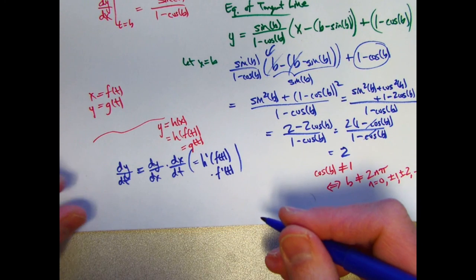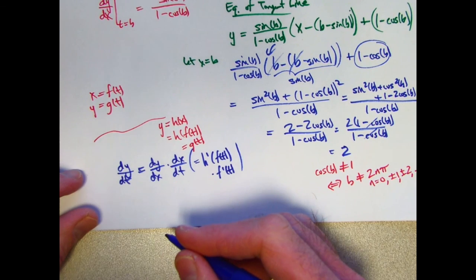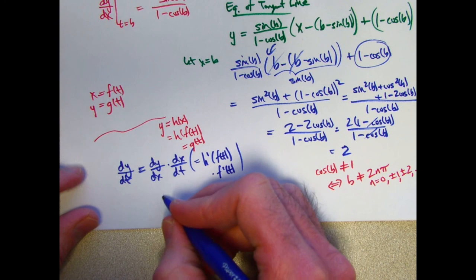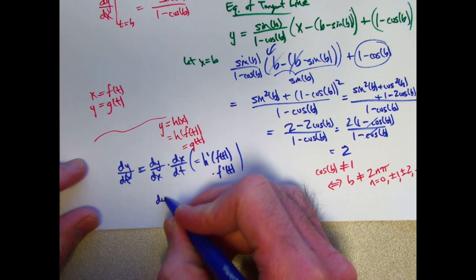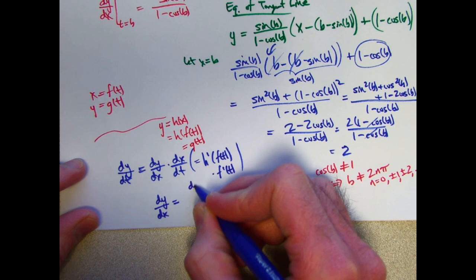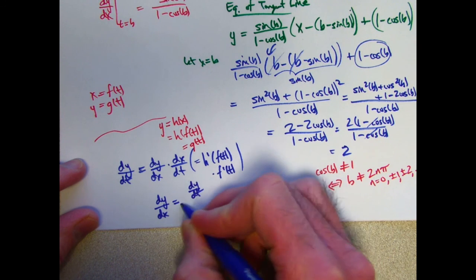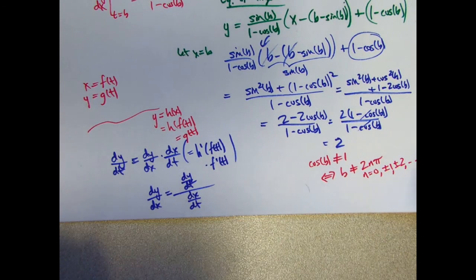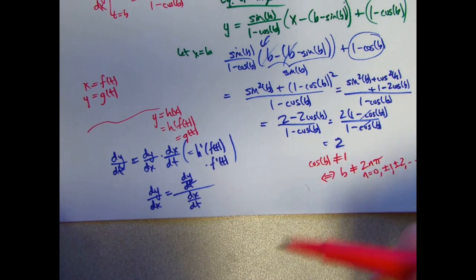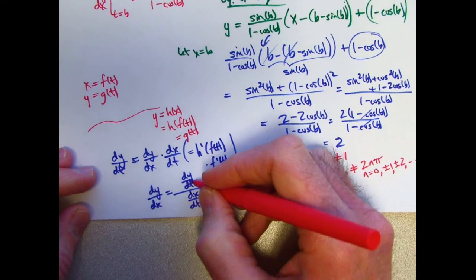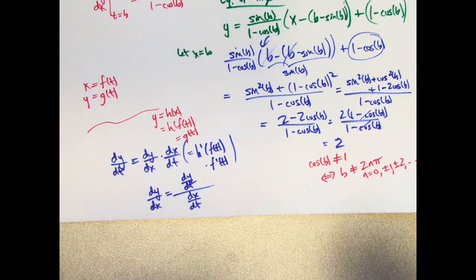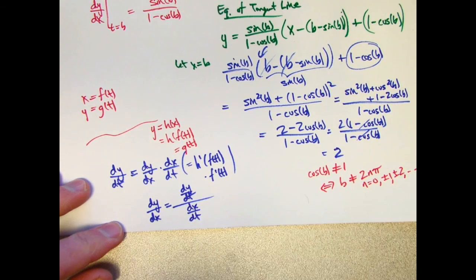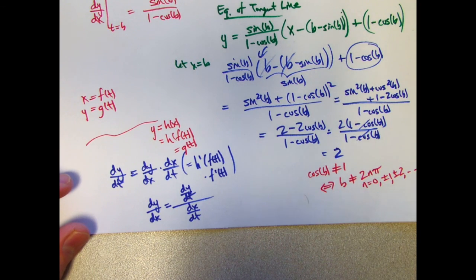With function notation that would be the same as h prime of f of t times f prime of t. And now, as long as you're not dividing by zero, you can divide both sides by dx/dt and get dy/dx equals the ratio dy/dt divided by dx/dt. Of course, there is also the intuitive justification of this that many engineers and scientists think of as imagine canceling the dt, but that's not really what's happening. But it sometimes doesn't hurt to think of it that way. And that's the end of this video. Thank you.